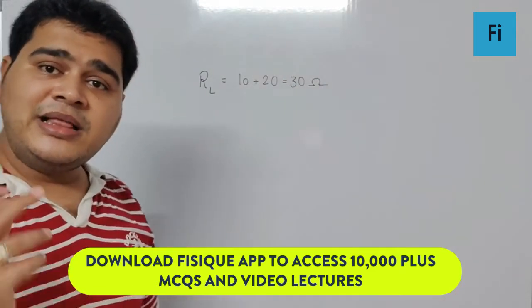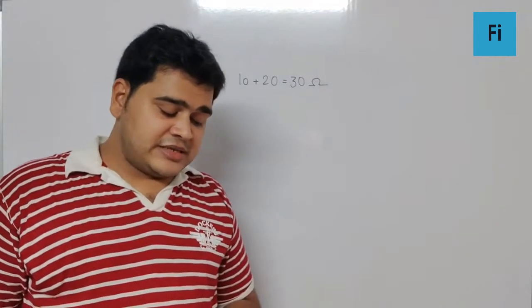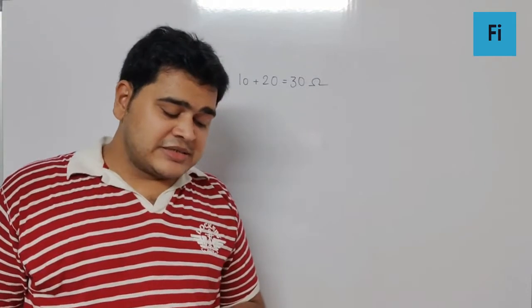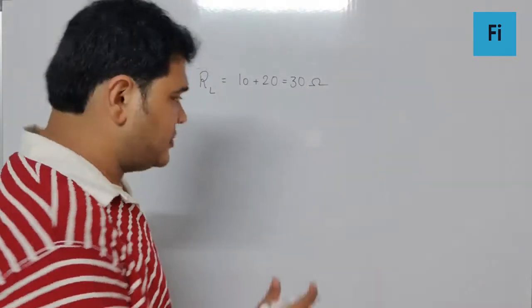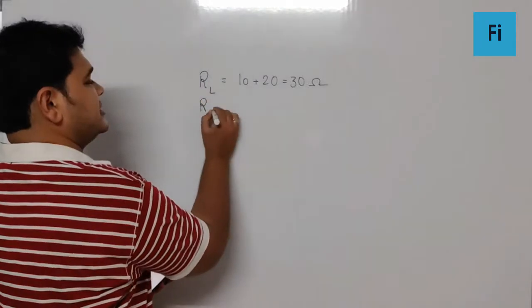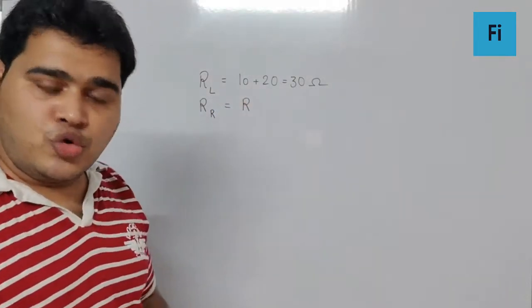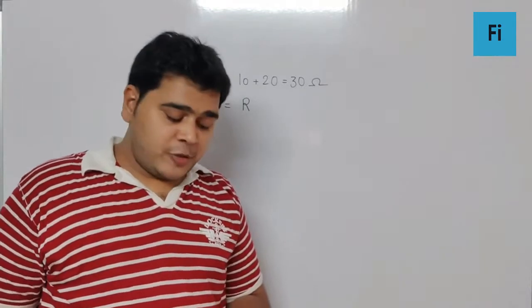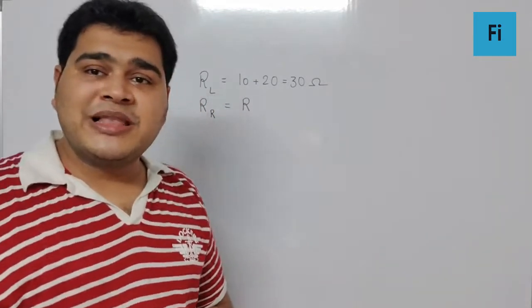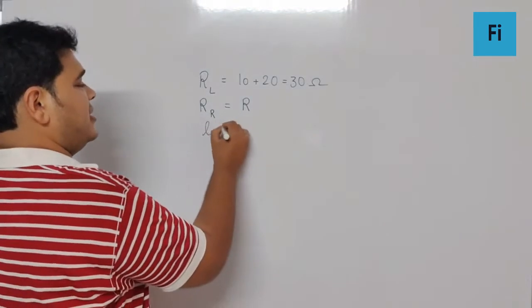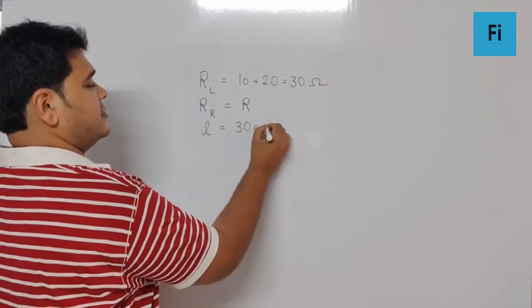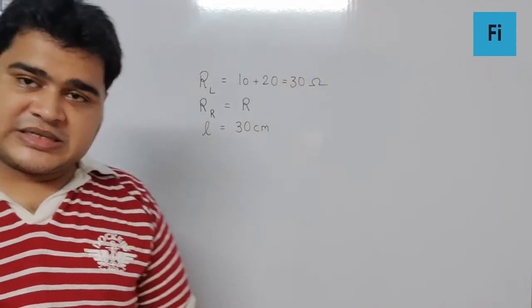This is the resistance in the left gap. Further, they say with a certain resistance R in the right gap - the resistance in the right gap is R, which is unknown. The null point is obtained at 30 centimeters from the left end, so L is 30 centimeters. This is the first case.